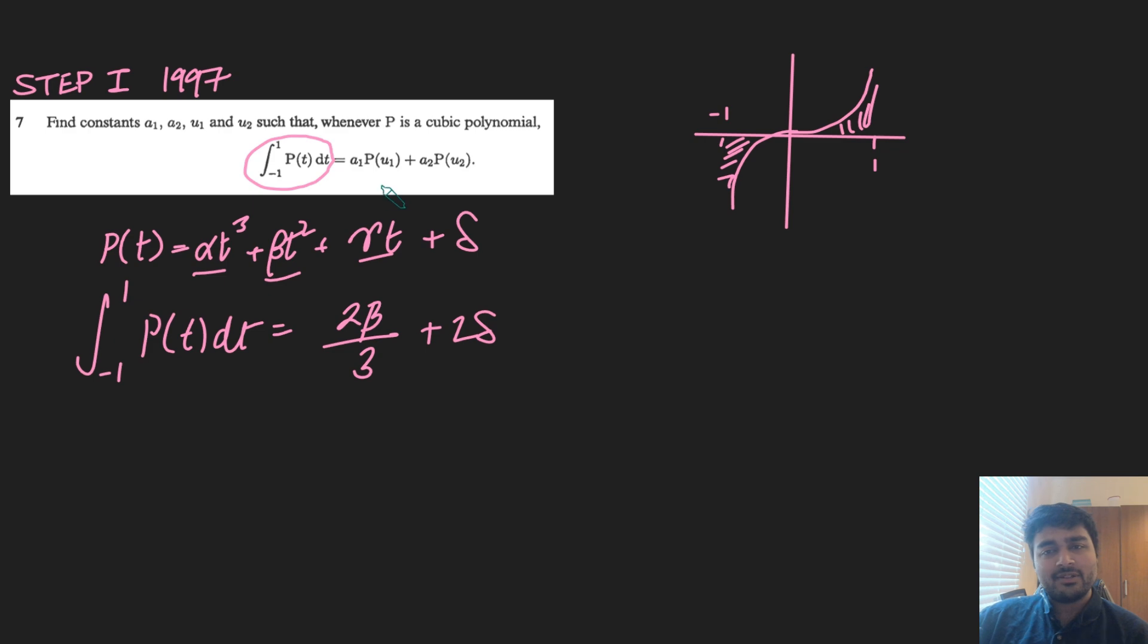So what I need to do is find constants a1, a2, and u1, u2, such that whenever I substitute u1 and u2 into this equation here, and then multiply them correspondingly by a1 and a2 and add them up, I always get 2 beta over 3 and 2 delta. So the first thing that strikes out to me is, well, I want these alpha and gamma terms to kind of cancel out, and I notice that both of those are odd.